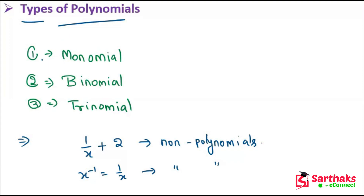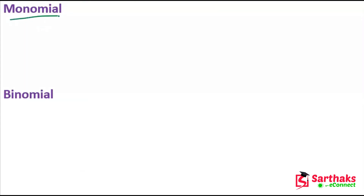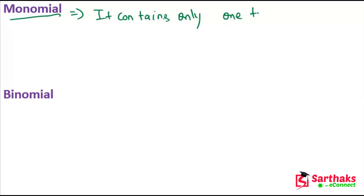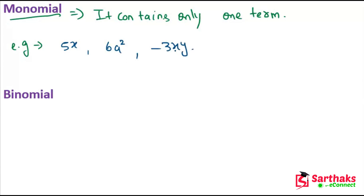A monomial is an expression which contains only one term. For an expression to be a monomial, the single term should be a non-zero term. For example, 5x, 6a squared, and minus 3xy are examples of monomials, because each contains only one term.